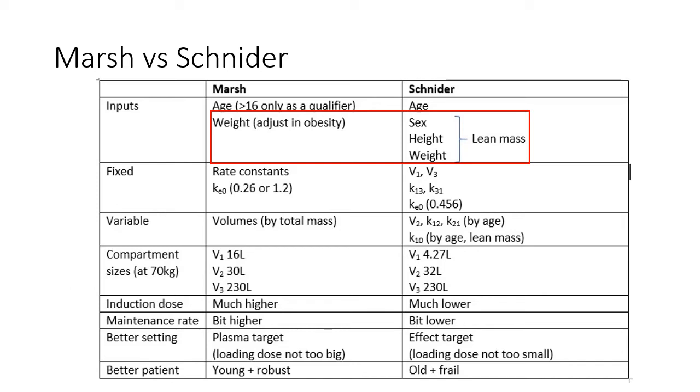Secondly, the size of the central compartment. At 70kg body weight, Marsh estimates a 16L central compartment, whereas Schneider estimates only 4.27L. This discrepancy is ironed out to some degree by the use of Schneider in effect site targeting mode, where overpressuring of the central compartment accelerates the rate of change in the effect site, but Marsh still gives a bigger induction bolus, pound for pound.